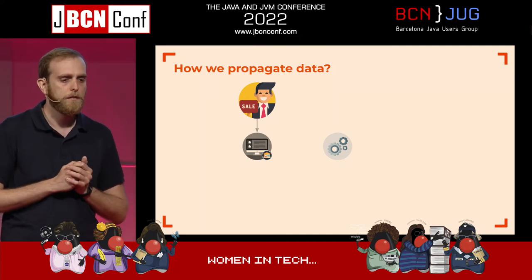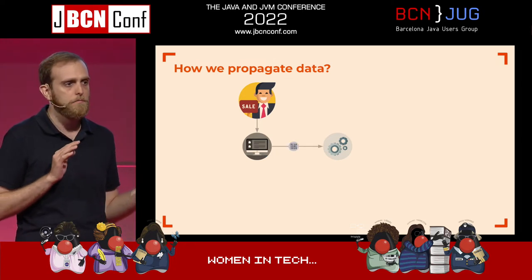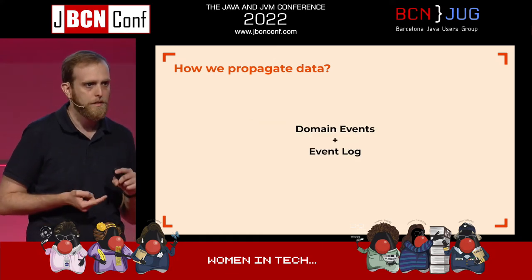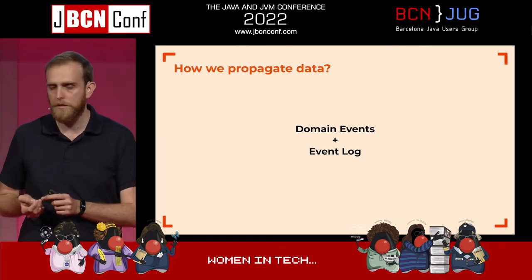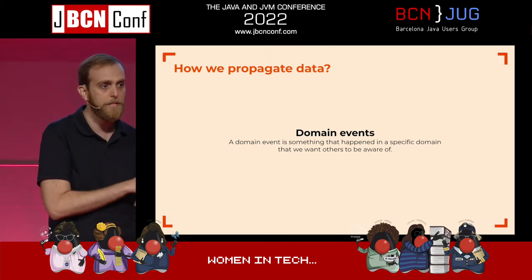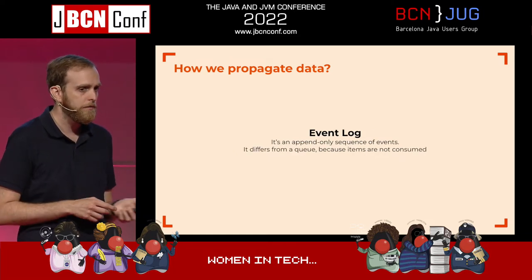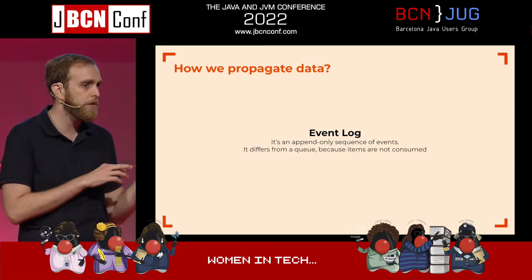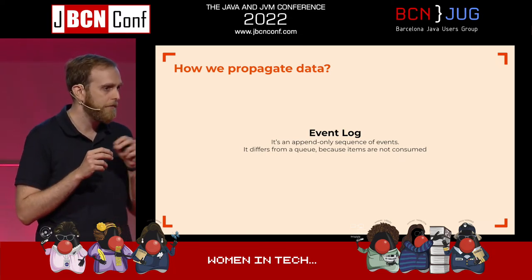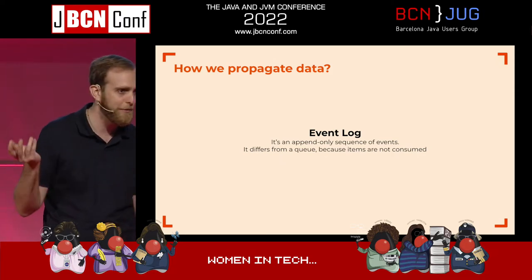How we propagate the data — we used two concepts: domain events and event logs. A domain event is something that happened in a specific domain that we want others to be aware of. An event log is an append-only sequence of events — it's not a queue. A queue expires messages when consumed, but a log is persistent and you can read it again and again if you can store it.